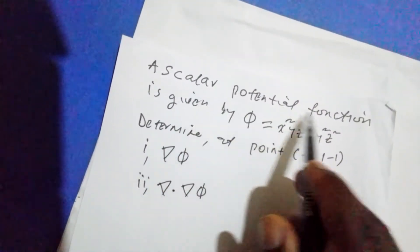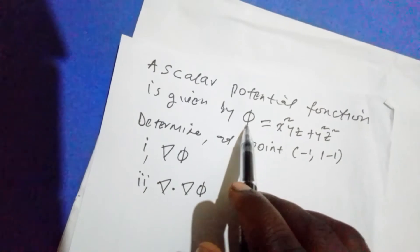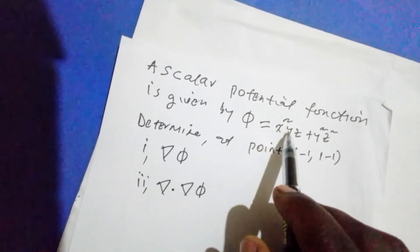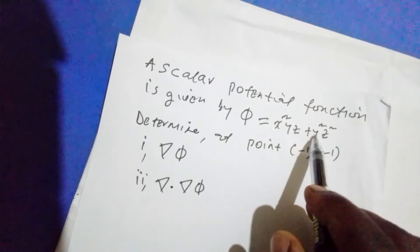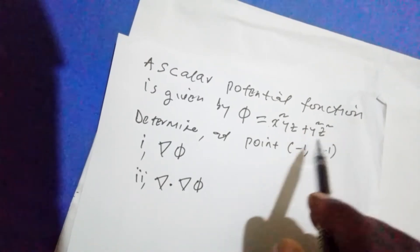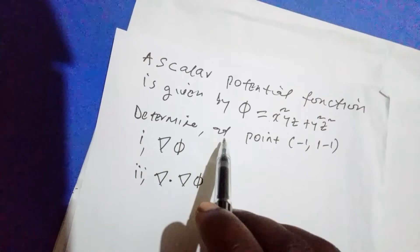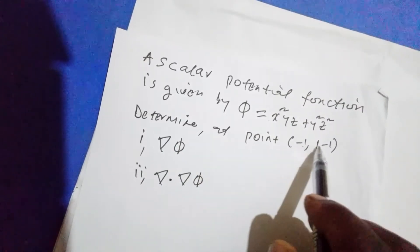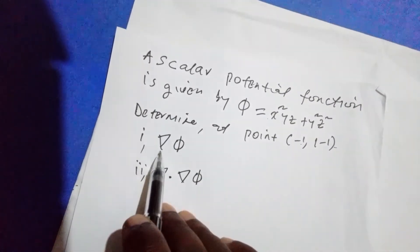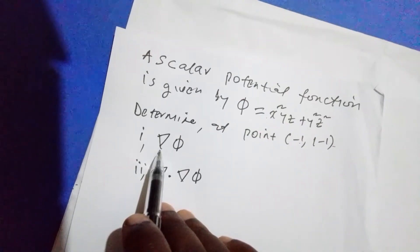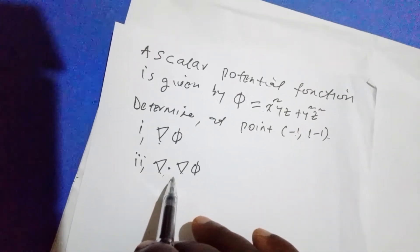A scalar potential function phi equals x squared yz plus y squared z squared. Determine at point negative 1, positive 1, negative 1, the gradient of the function and the divergence of the function.